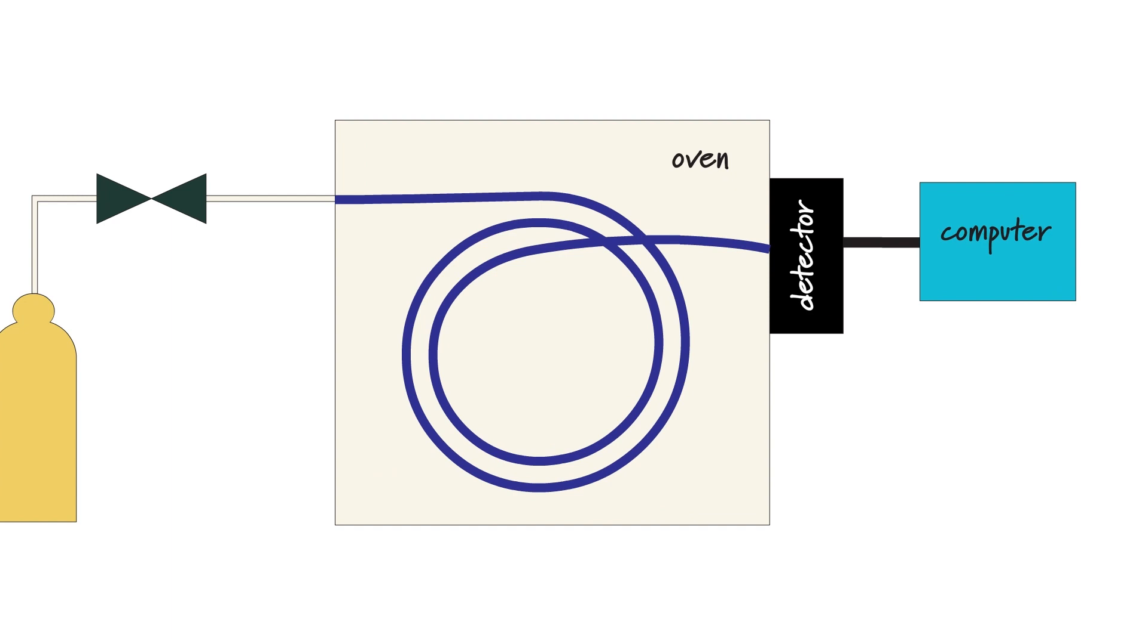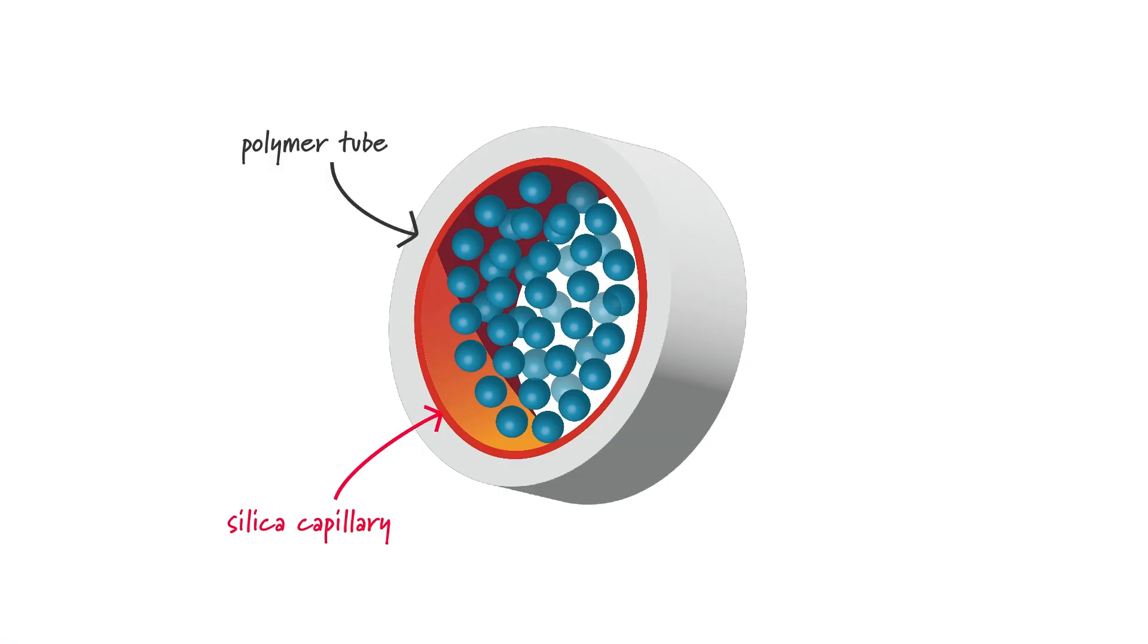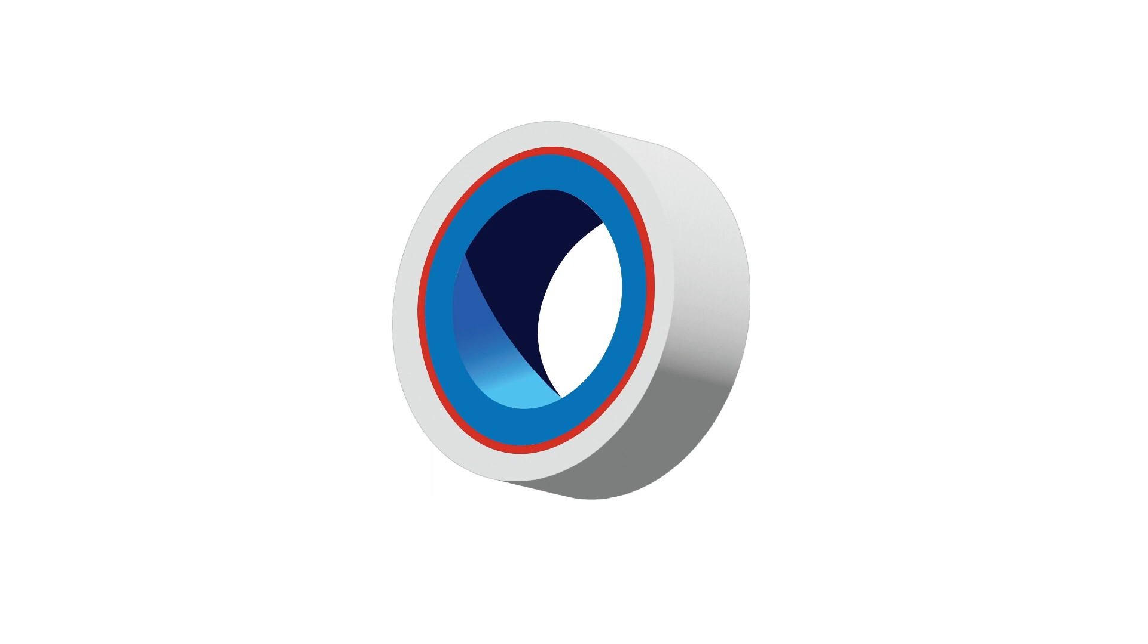So what is the stationary phase? Well basically it's just a really long column up to 100 meters long and we can pack it with either an inert solid coated in a liquid or we can coat the liquid onto the inside of a very thin silica capillary tube.